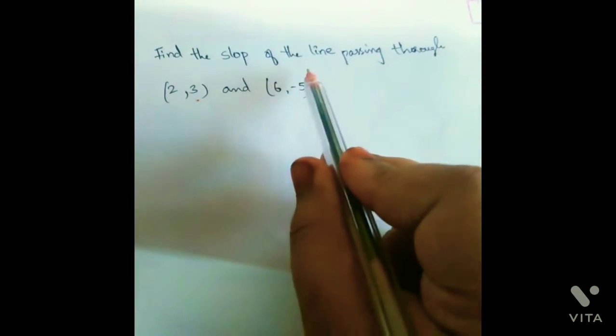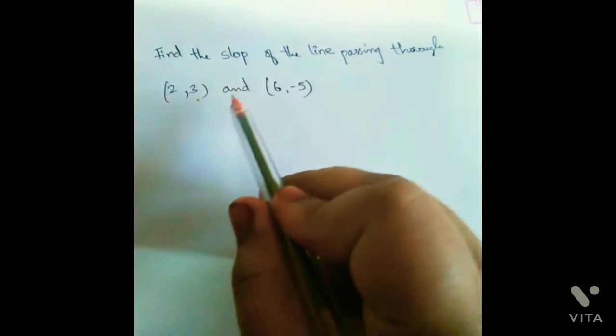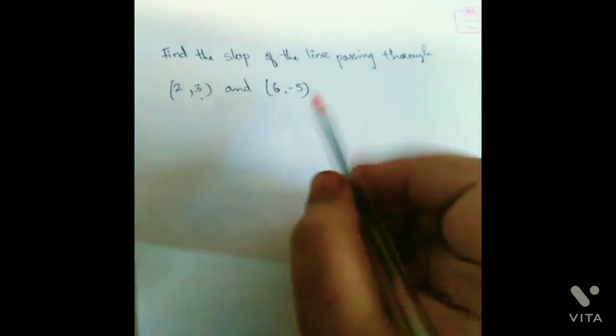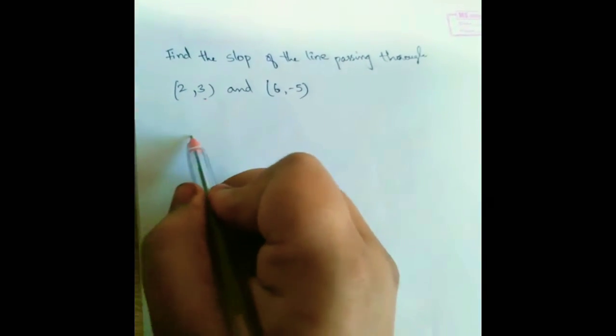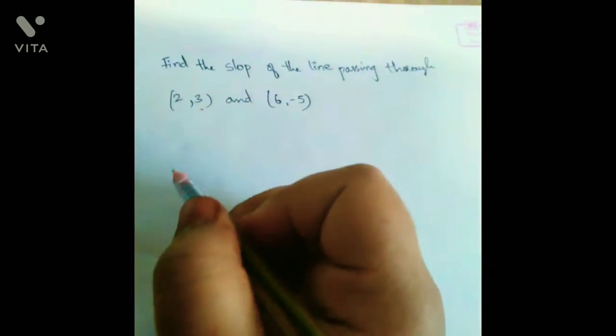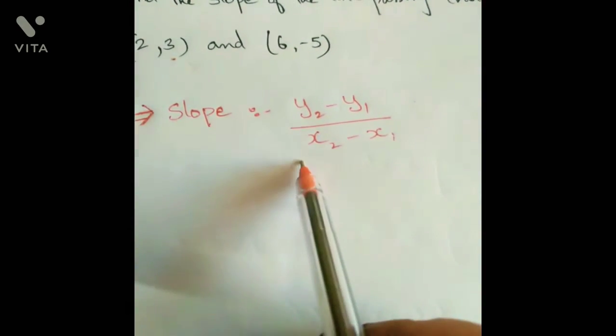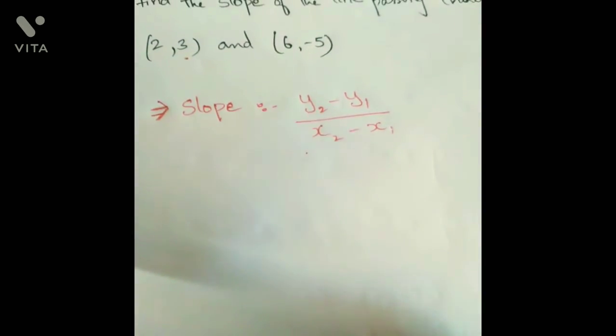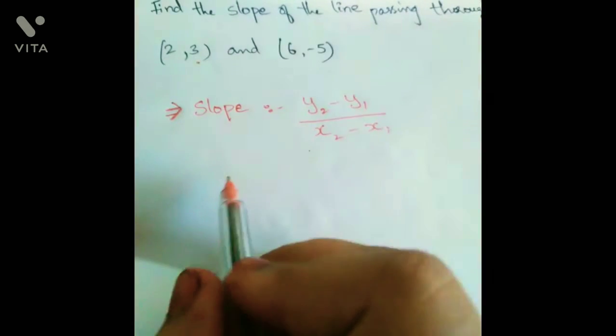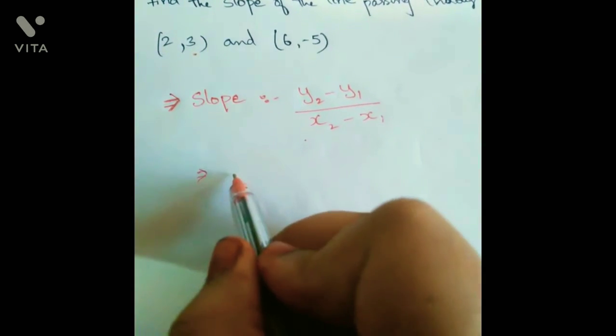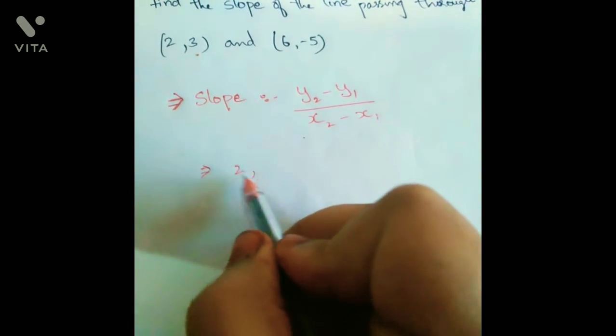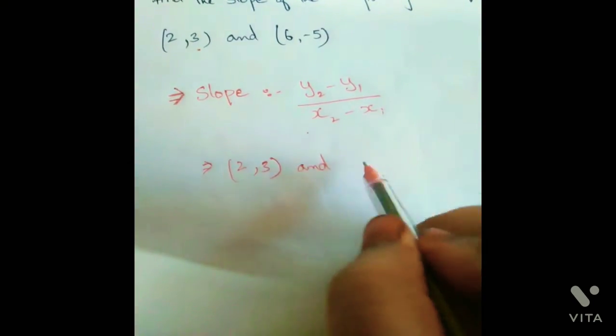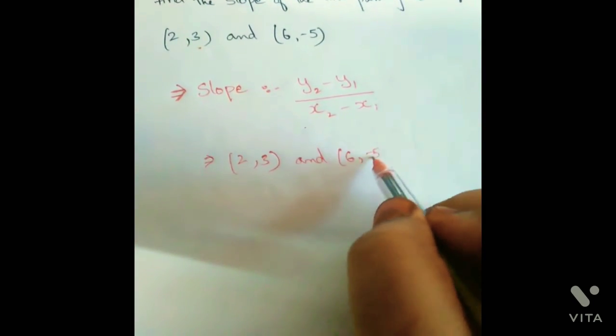Find the slope of the line passing through (2,3) and (6,-5). First we should write the slope formula. The slope formula is y2 minus y1 by x2 minus x1. Now 2 comma 3 and 6 comma minus 5.